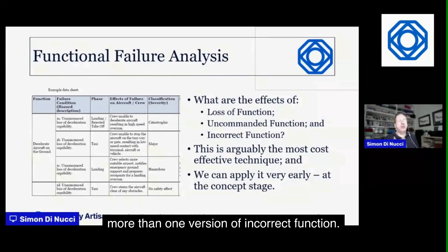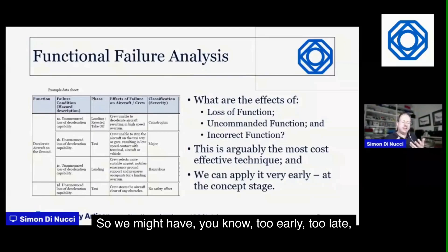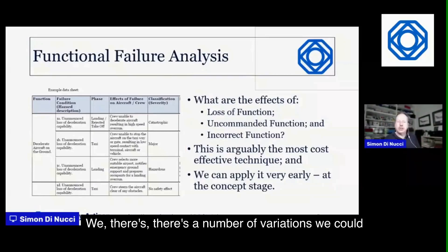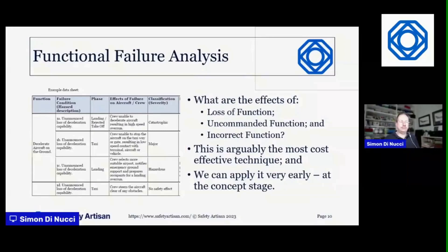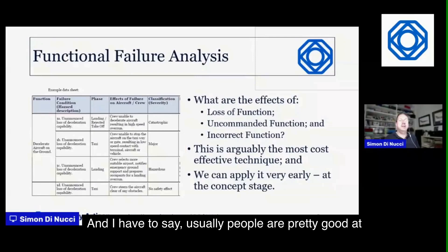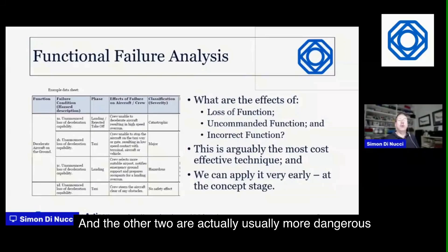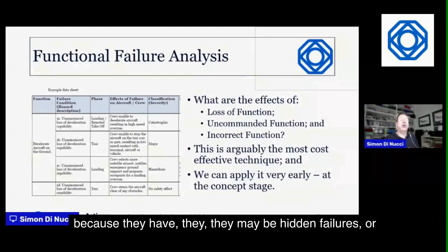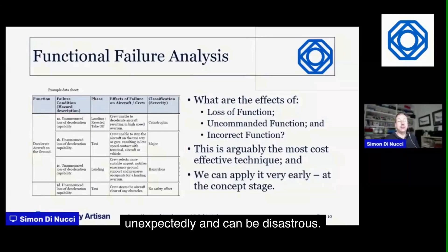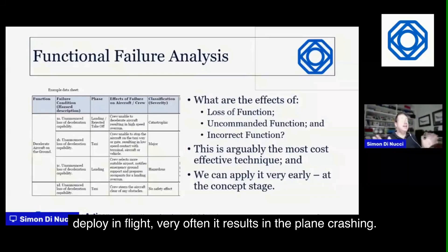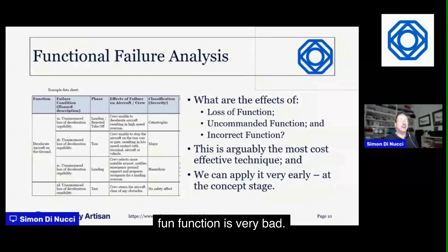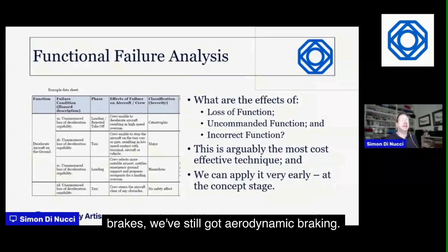There may be more than one version of incorrect function: too early, too late, intermittent, not enough, too much. These are the three basic prompts. People are usually pretty good at thinking about loss of function, but not so good at the other two — which are actually usually more dangerous because they may be hidden failures or unexpected events. For example, if thrust reverser buckets deploy in flight, it often results in the aircraft crashing — very bad. But missing thrust reverse on the runway is less critical because you still have wheel brakes and aerodynamic braking.